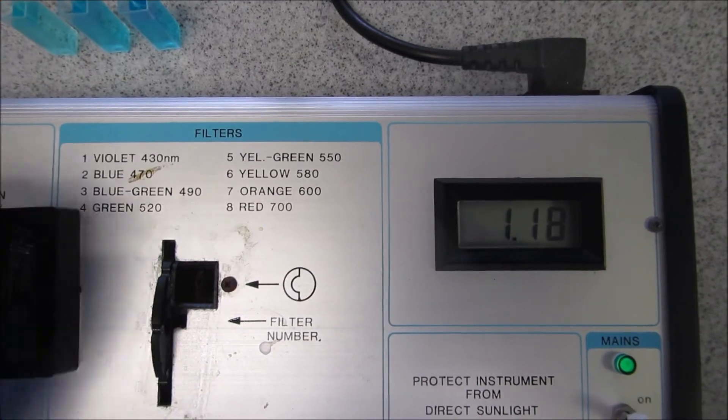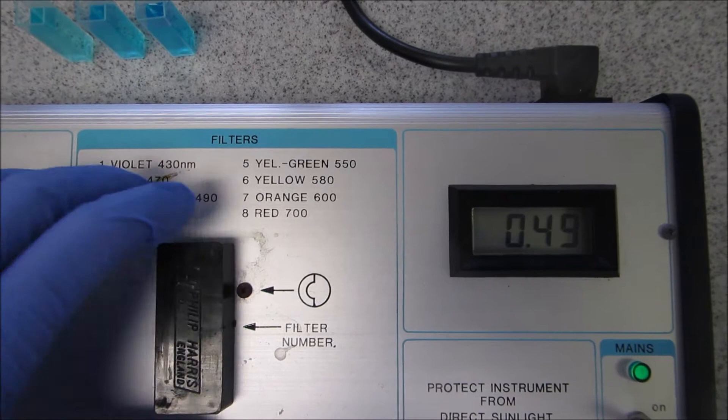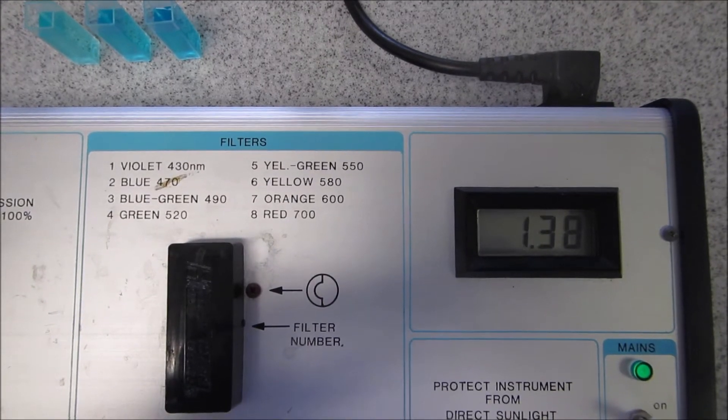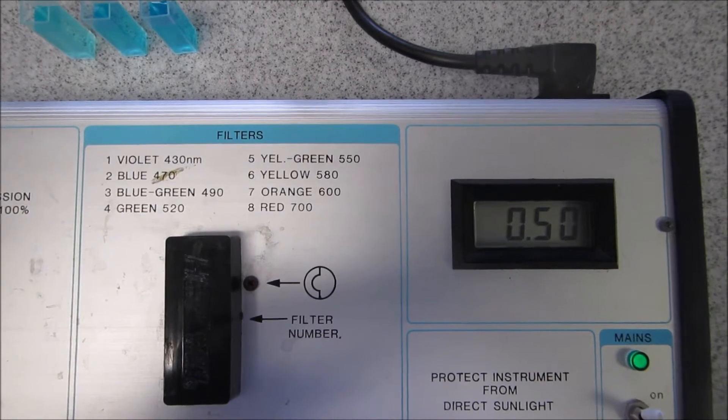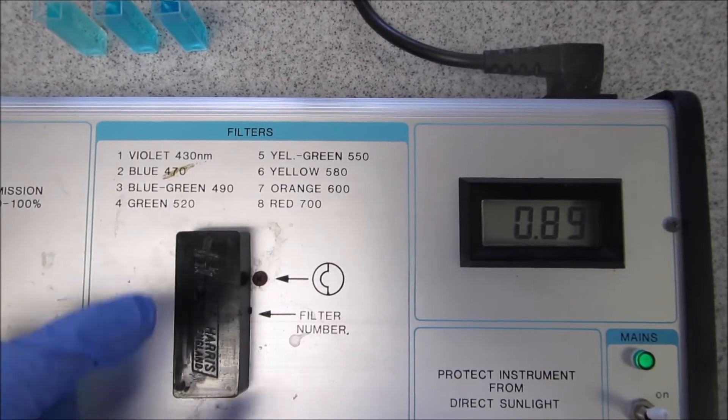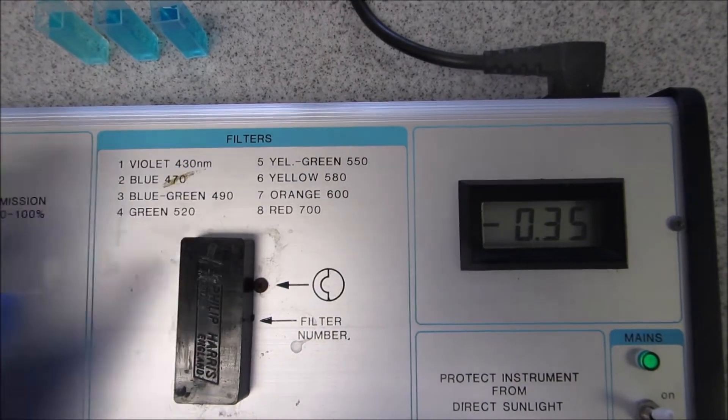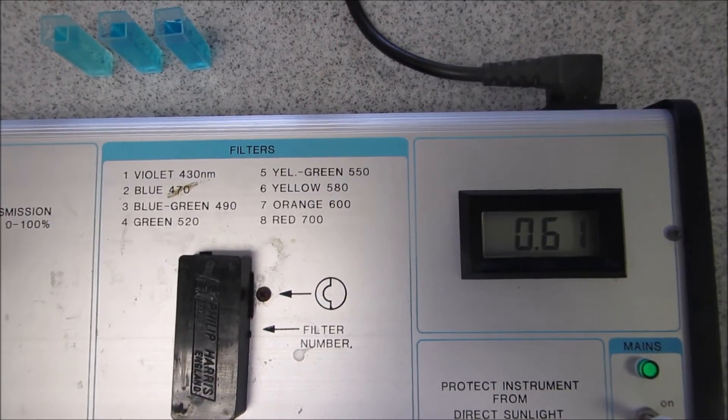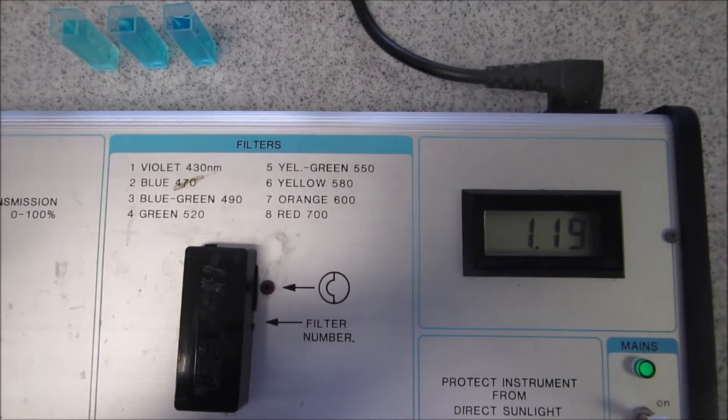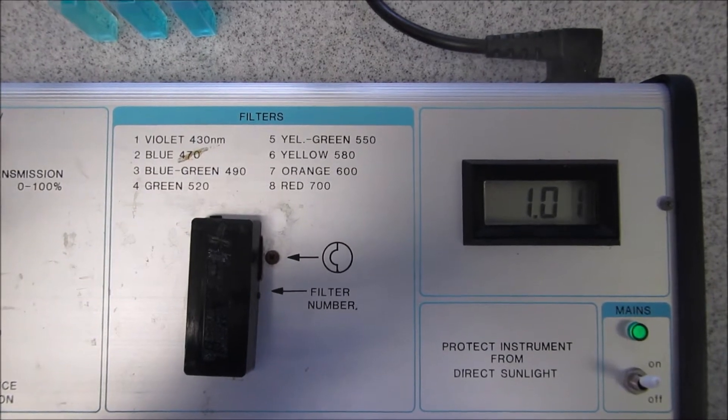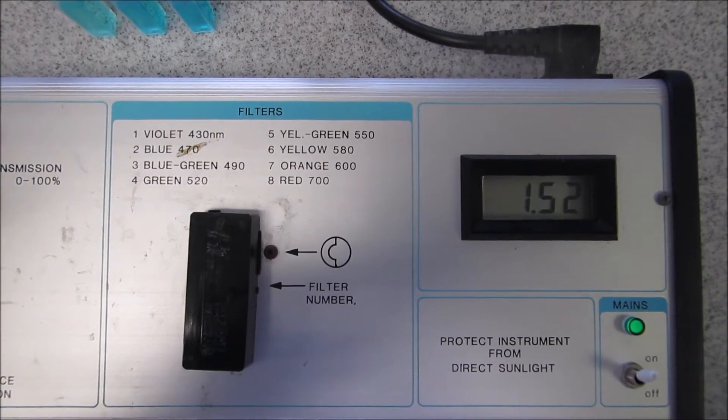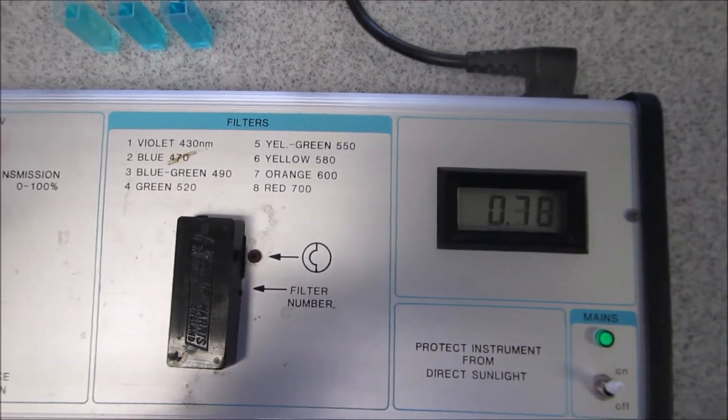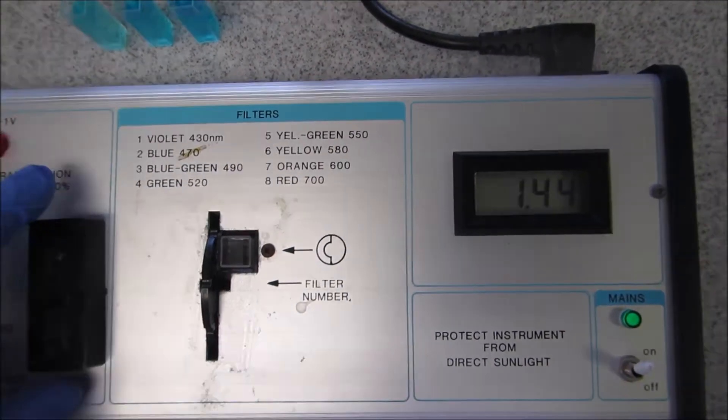Now I'm going to take it up to number 6 which is 580 nanometers and zero it again with my blank. Sometimes it can take a while to blank, and if it doesn't look like it's going to go I'm going to try adjusting. If after a while it will not settle, you may have to just skip that one. I think I'm going to skip it.